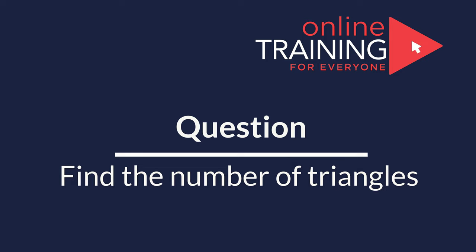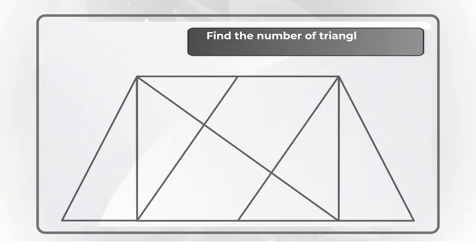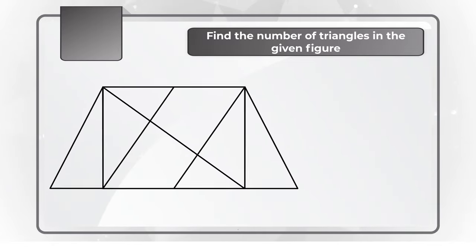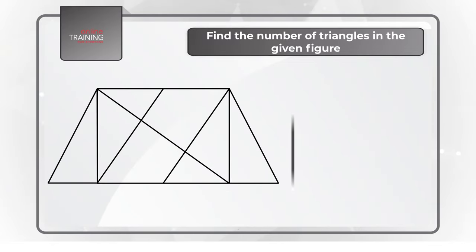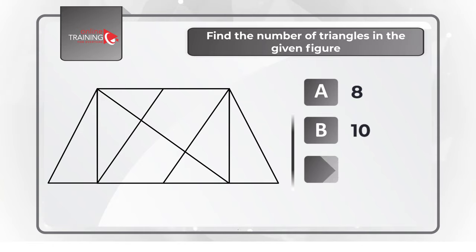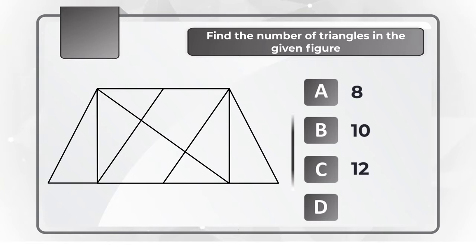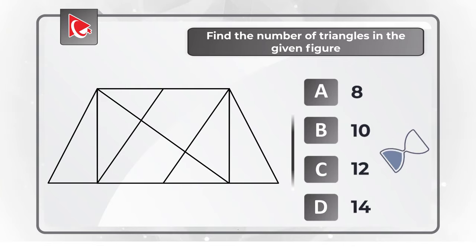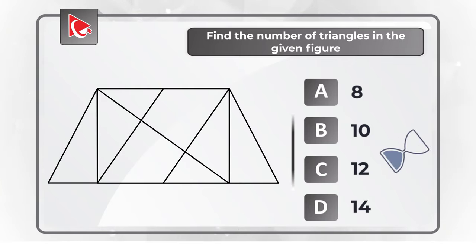Here's the question for you to try your skills. You need to determine how many triangles are shown on the screen. You have four choices: A: 8, B: 10, C: 12, D: 14. Feel free to pause this video to calculate the right answer, and make sure to post your solution in comments so I can give you my feedback.